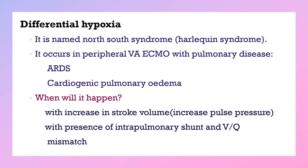Differential hypoxemia is named North-South syndrome or Harlequin syndrome. It happens when the patient is placed on VA ECMO and also has pulmonary disease, such as ARDS or cardiogenic pulmonary edema.